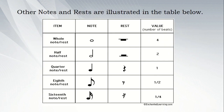The other notes and rest are illustrated in the table. As you can see, the whole note and whole rest both have four beats. The half note and half rest both have two beats. The quarter note and quarter rest each have one beat. The eighth note and eighth rest both have one half beat. The sixteenth note and sixteenth rest, which both have two hooks, have a quarter beat — or one part beat.